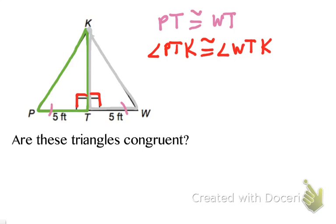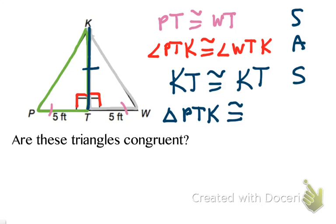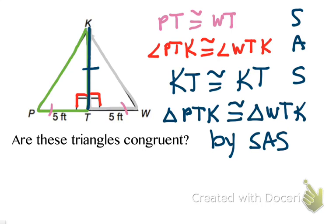Some people wonder why I didn't just call them angle T and angle T — but they are two different angles, and since they share the same vertex point, I need to name them with three letters to be specific. Lastly, these two triangles share a common side, so side KT is congruent to side KT. Now I have a side, an angle, and a side, with the angle in the middle of the two sides. So triangle PTK is congruent to triangle WTK, by the side-angle-side rule.